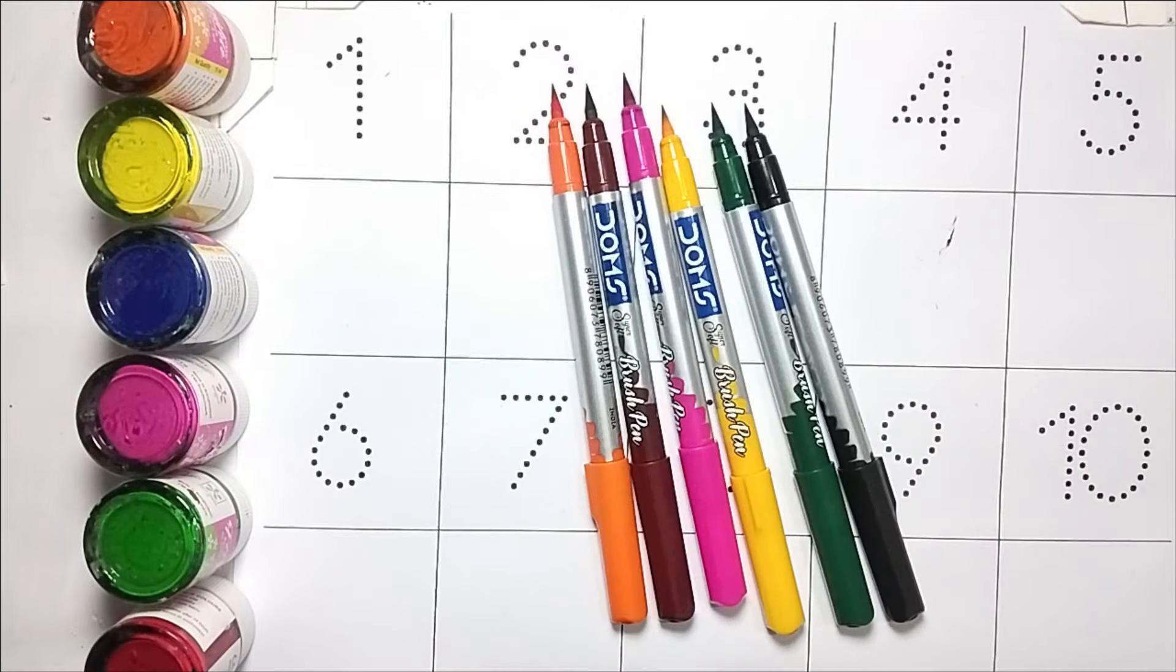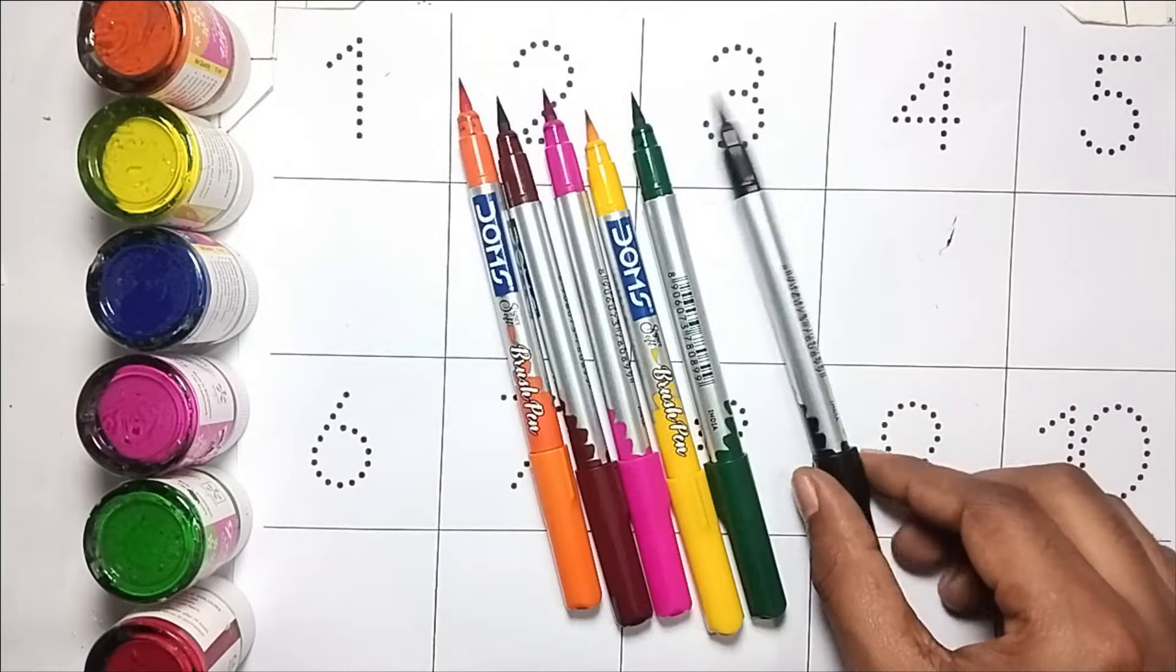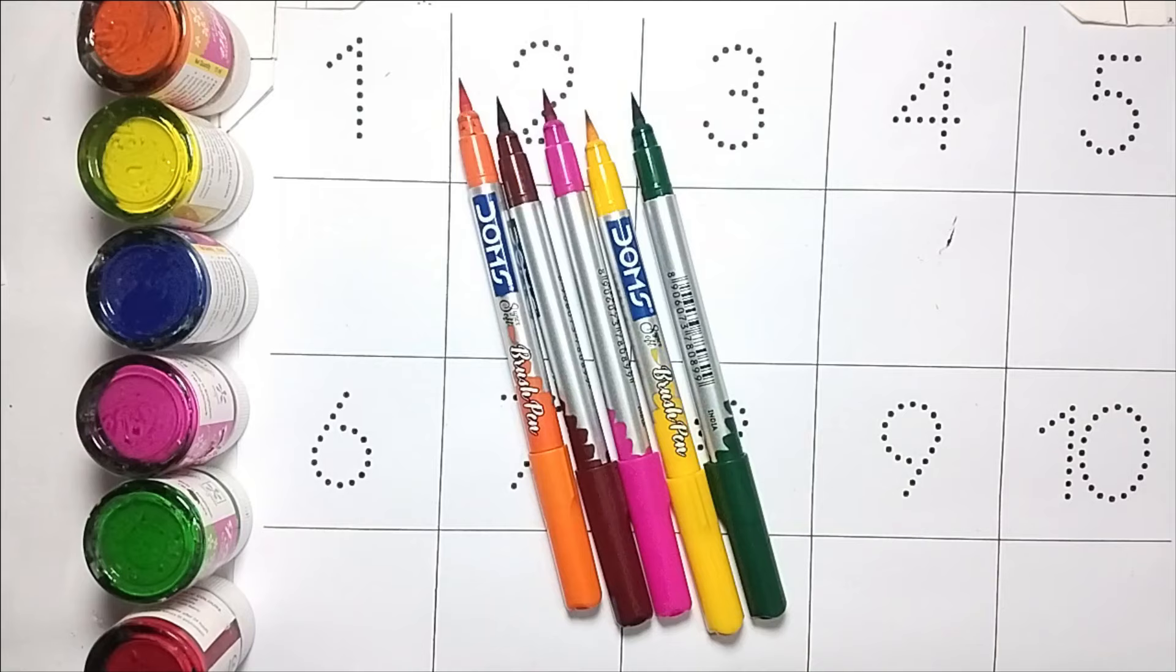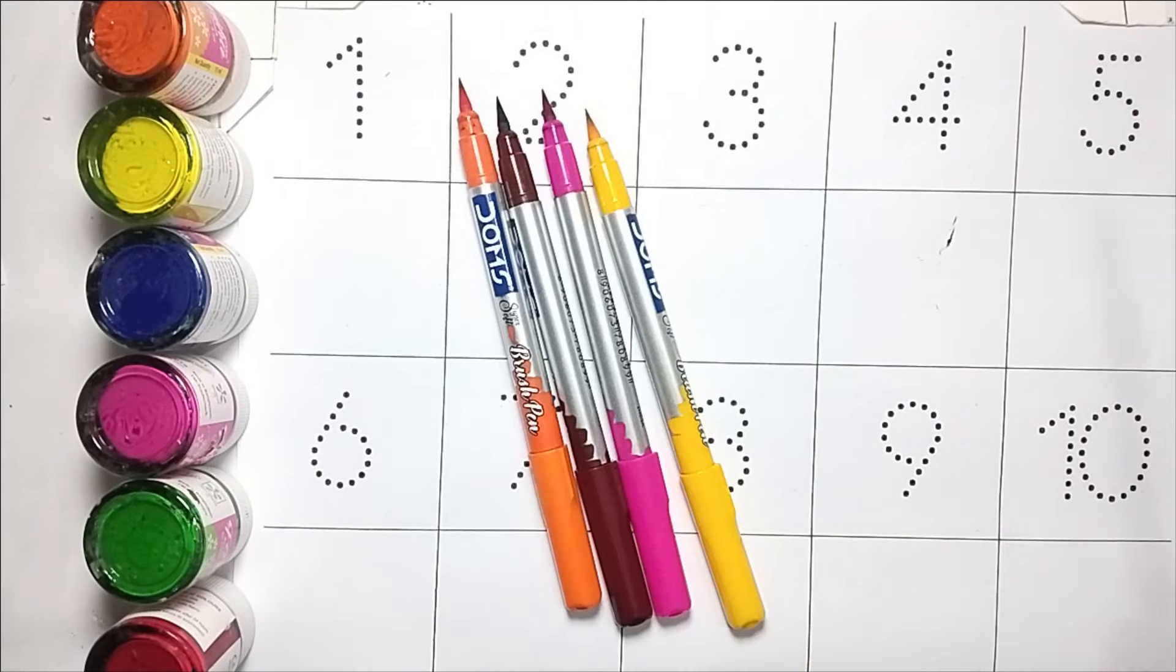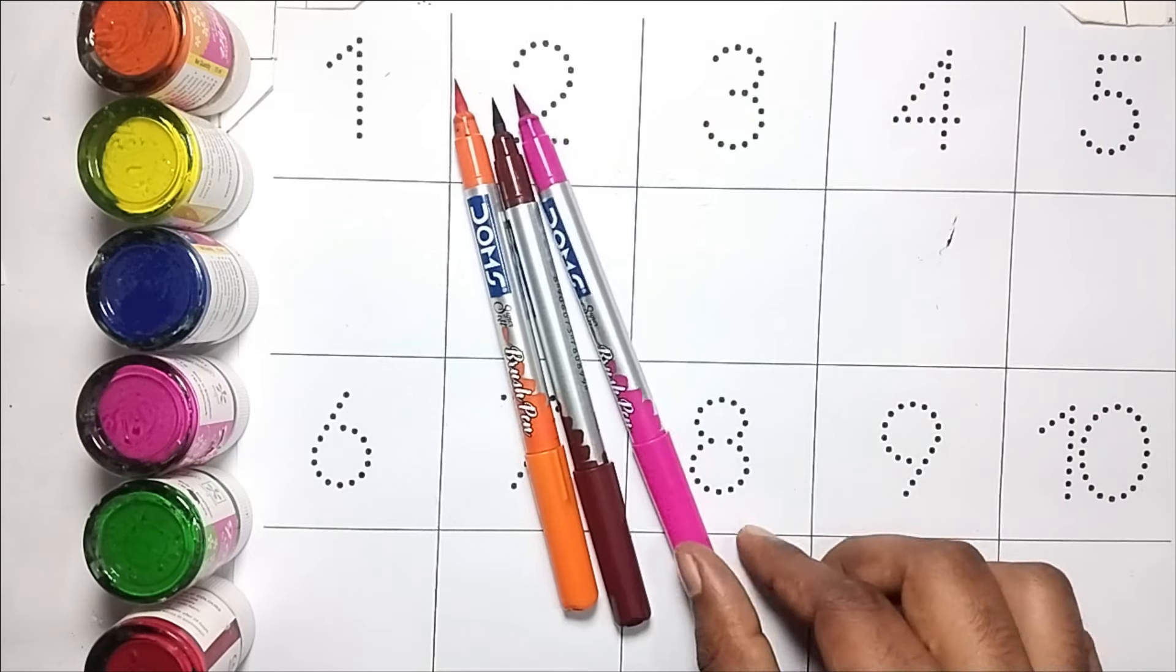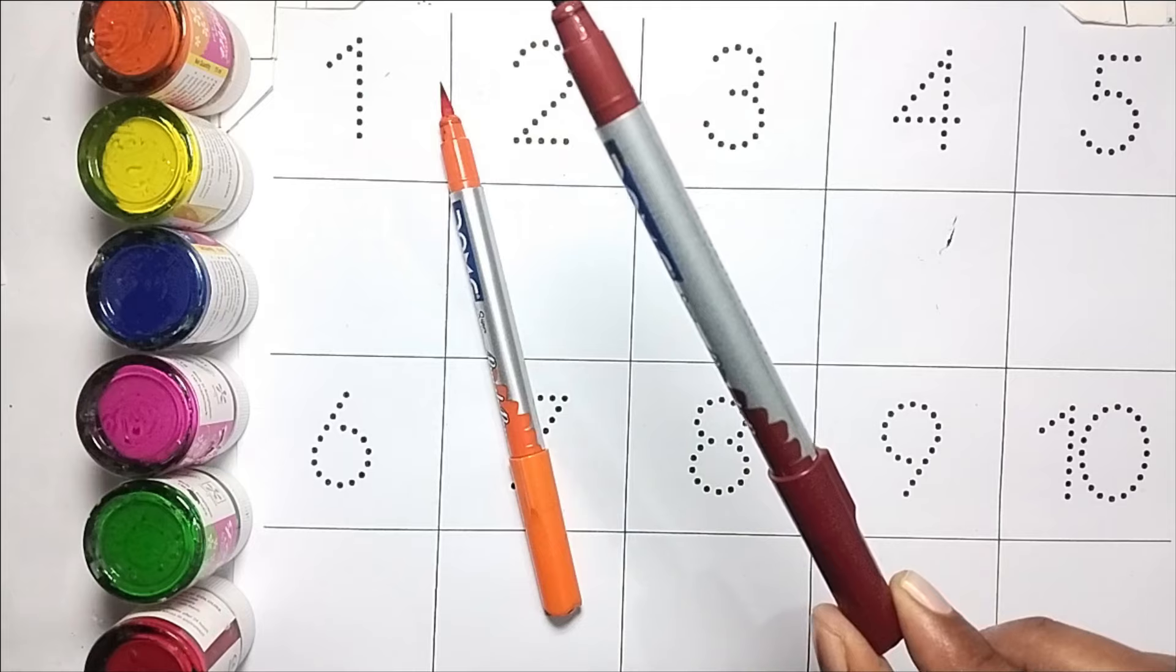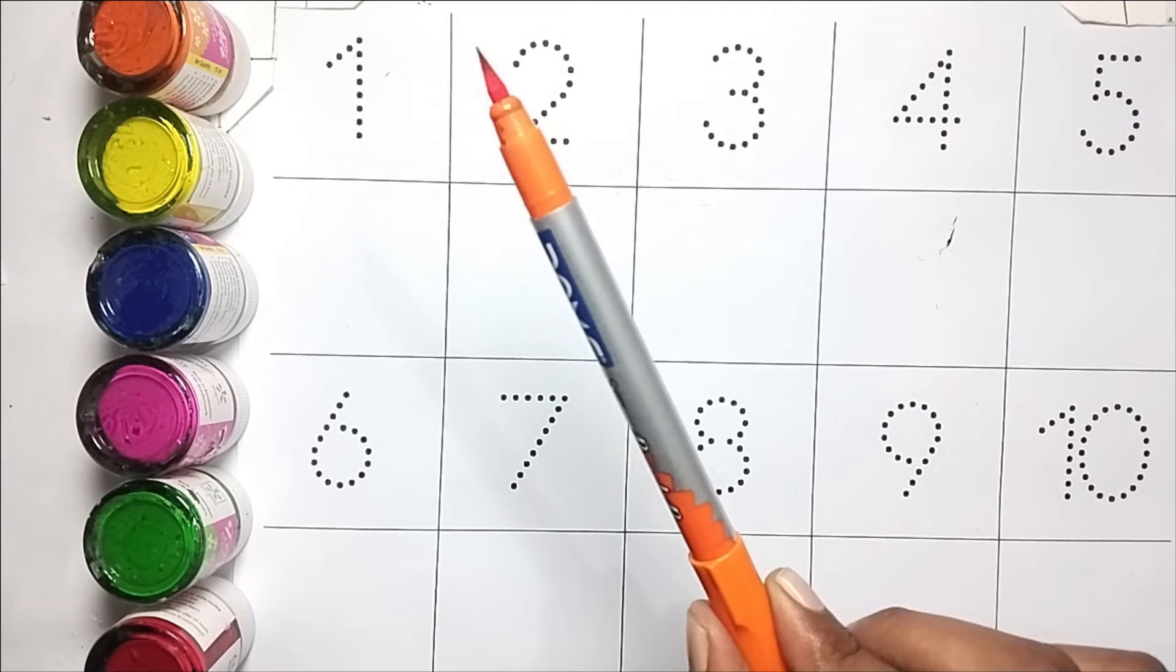Hello kids, today we will learn numbers one, two, three. This is our colors: this is black color, this is green color, this is yellow color, this is pink color, this is brown color, this is orange color.